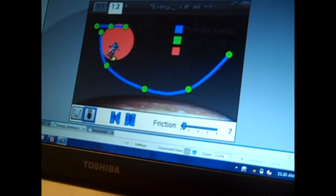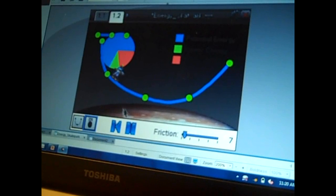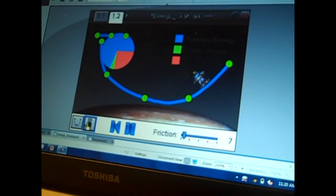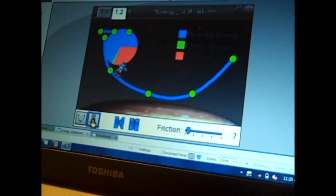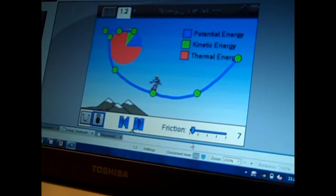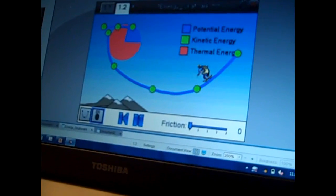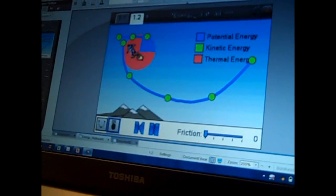You're not just changing the picture there, you're actually changing the gravity that goes along with the simulation. Because everyone wants to know what it's like to skateboard on the moon versus here on Earth. And the graph that's adjusting in the background is the various energies.